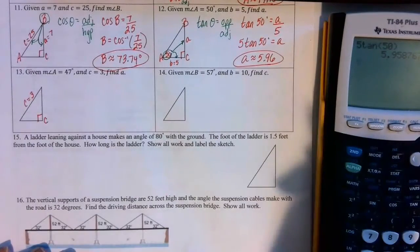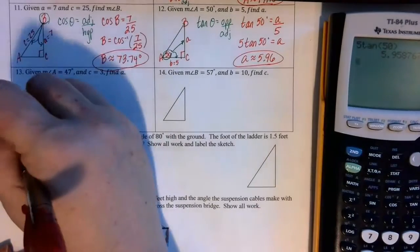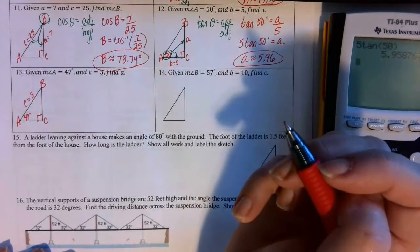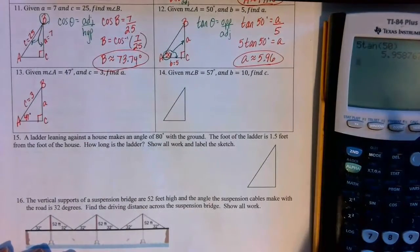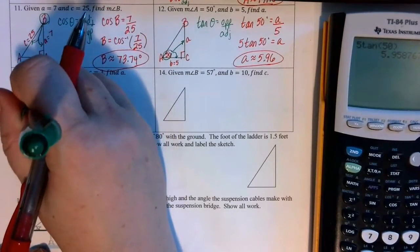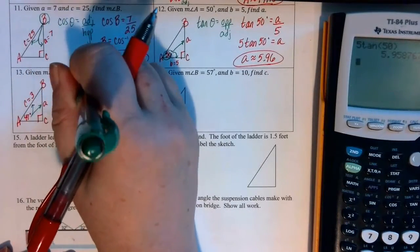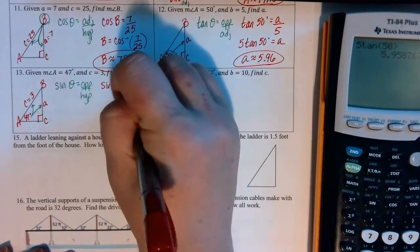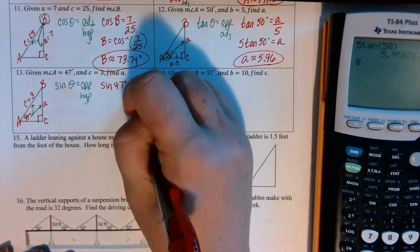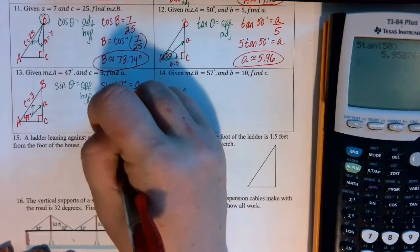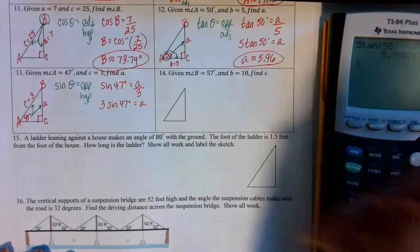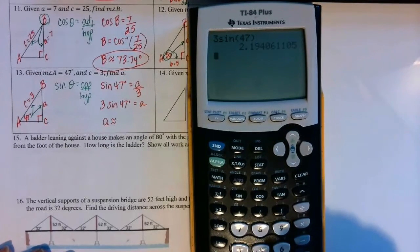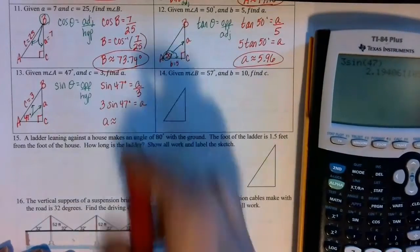In number 13, our right angle again is C. The side opposite is little c, that's the hypotenuse, and that equals 3. Angle A is given as 47 degrees, and we're asked to find side A. Side A is opposite angle A, so opposite and hypotenuse gives us the sine ratio. The sine of 47 degrees is equal to A over 3. We multiply both sides by 3 to get A by itself.